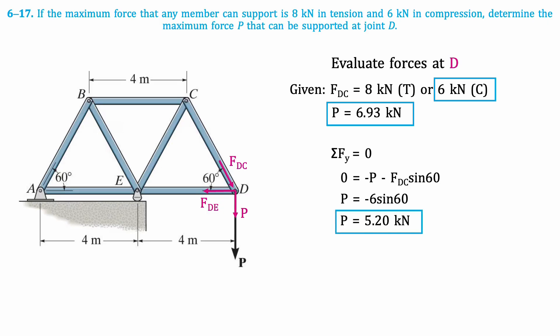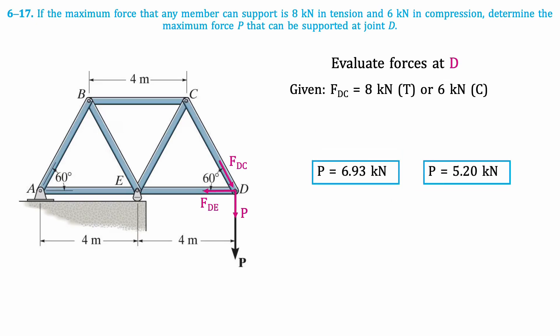Now, we can compare our two values of P we solved for, and determine its maximum force. The members can only support the smaller of these two forces, because that represents the weakest member's limit. Therefore, 5.2 kN is the maximum force that the truss can support.